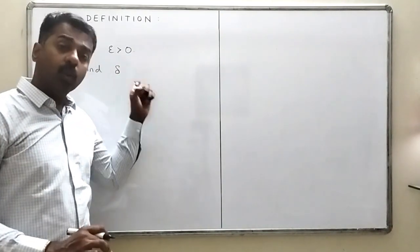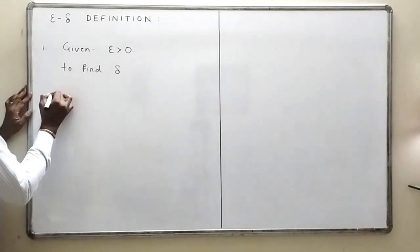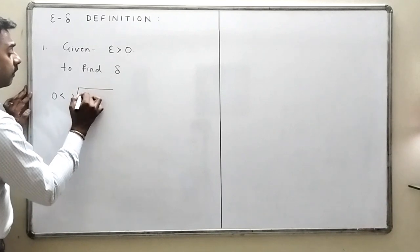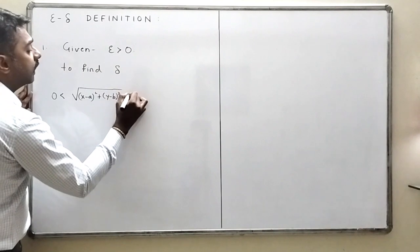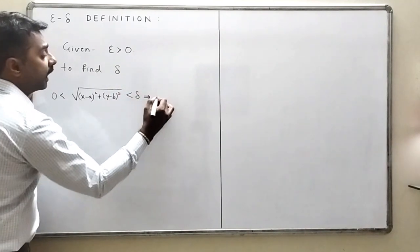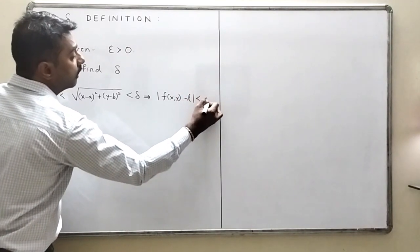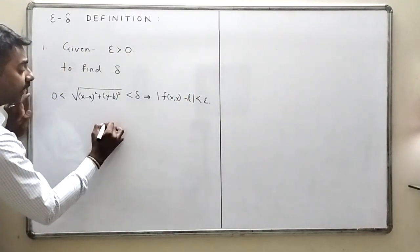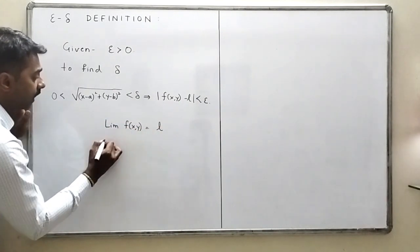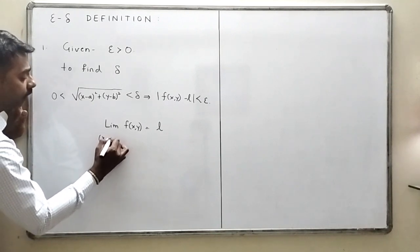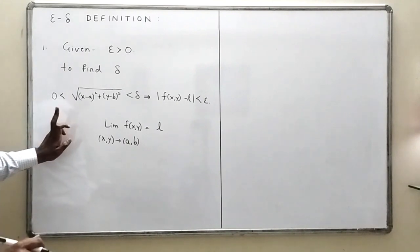I will try to explain how to find delta smartly, such that the definition of limit holds: zero less than the square root of (x minus a)² plus (y minus b)² less than delta implies that |f(x,y) minus L| is less than epsilon. Once I am able to do this, I can say that the limit of f(x,y) equals L as (x,y) tends to (a,b).